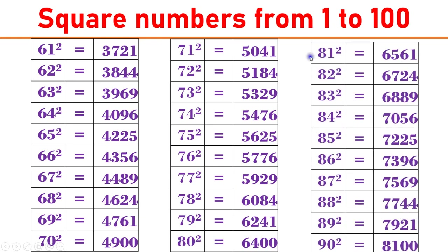81 square equals 6561. 82 square equals 6724. 83 square equals 6889. 84 square equals 7056. 85 square equals 7225.